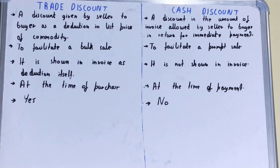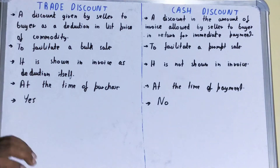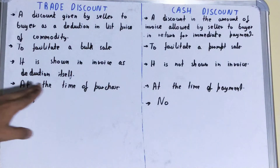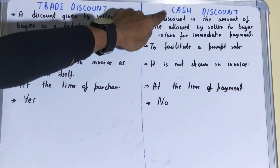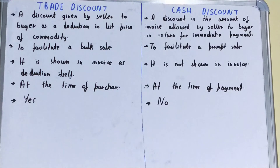If we talk about when it is allowed: trade discount is allowed at the time of purchase, whereas cash discount is allowed at the time of payment.